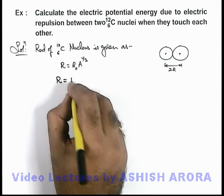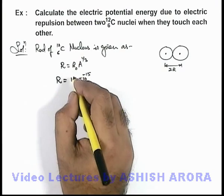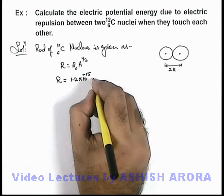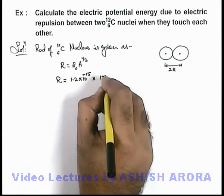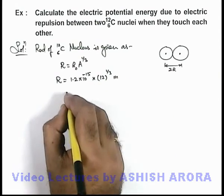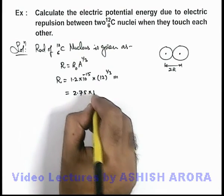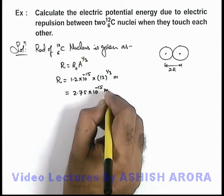So here the value of R will be 1.2 × 10⁻¹⁵, which we are taking as value of Fermi constant, multiplied by 12 to the power 1/3. This we are getting in meters. So on simplifying we are getting it as 2.75 × 10⁻¹⁵ meters.